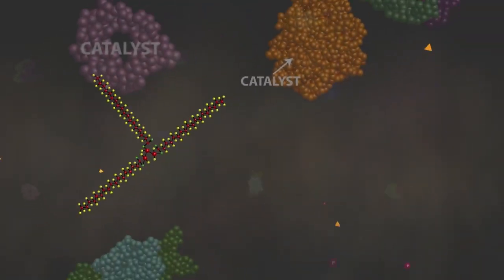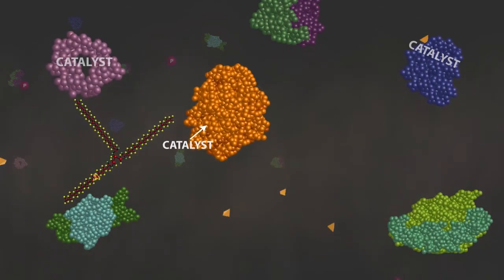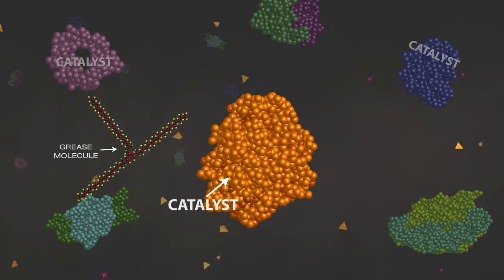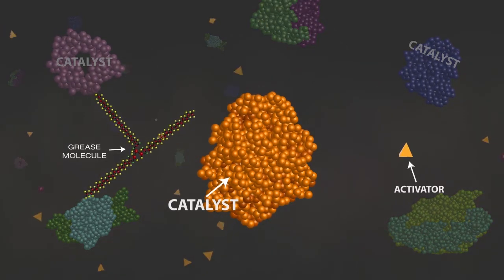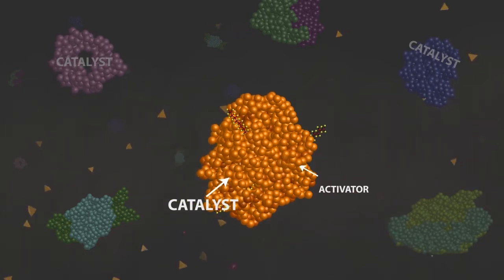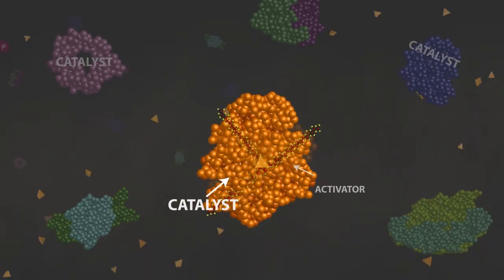Quicksimel is a blend of unique catalysts that each serve a different grease-degrading function. The orange structure pictured here is one of these catalysts. It's the first step in the process that breaks the grease molecule into three separate long chains. The triangular activator shown here initiates the transformation.